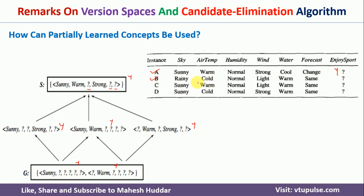Now take the second example. Here, the hypothesis contains sunny but the example has rainy — no match, so it is classified as no. The same applies across the other hypotheses: sunny vs. rain gives no match; warm vs. cold gives no match. All six hypotheses classify this second example as no, so there is no issue with the first two examples.